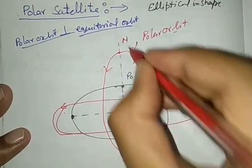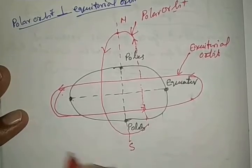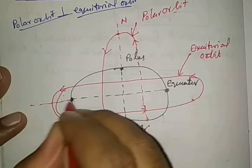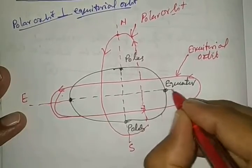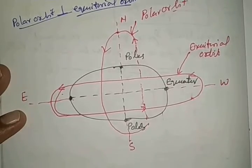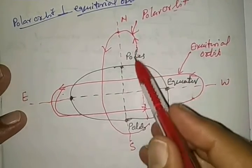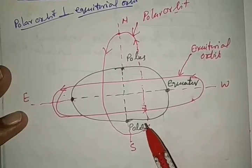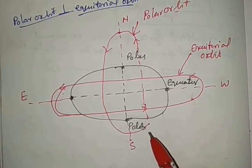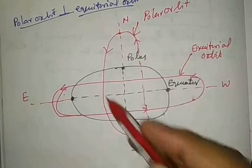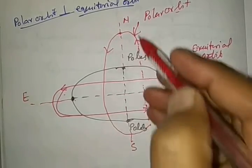This is position of north, south. This is position of east and this is position of west. So this is the polar orbit, and polar satellites revolve around this elliptical Earth in polar orbit.